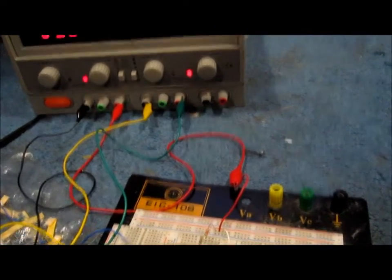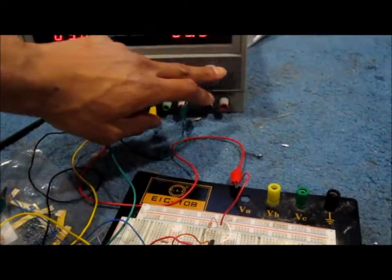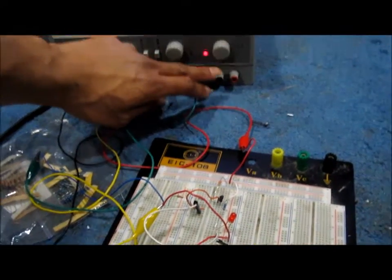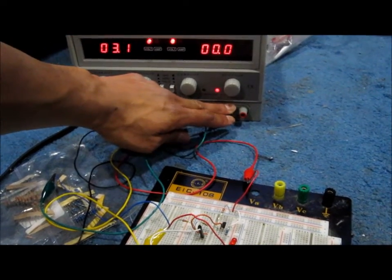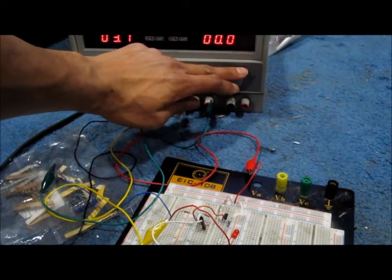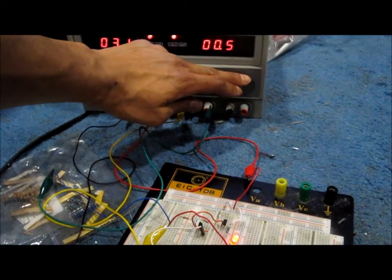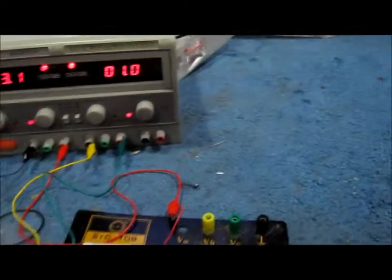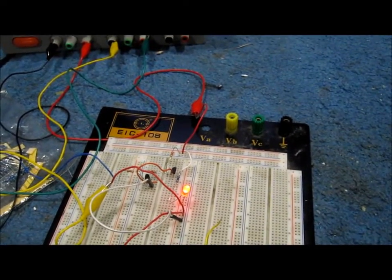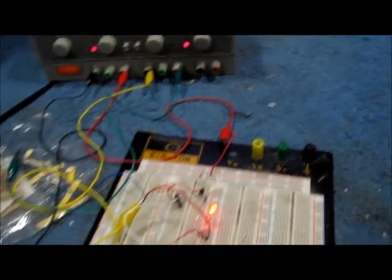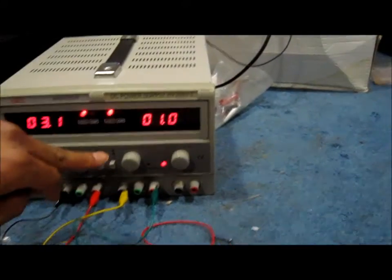So right now I'm going to increase the voltage from zero volts. Let me get a good angle. I increased it to about one volt, that's all it needs, and you can see now that the LED turns on. So now you can see one volt. Now I'm going to decrease it back to zero volts.